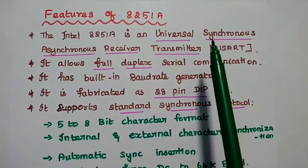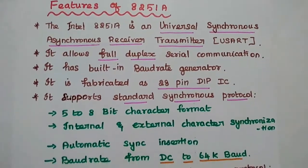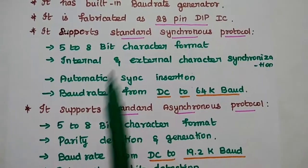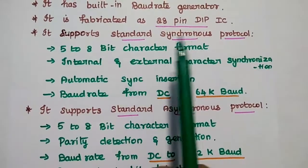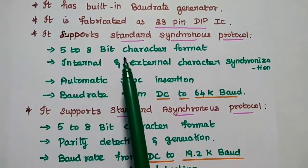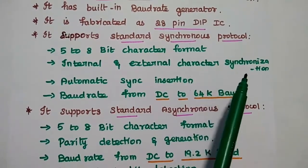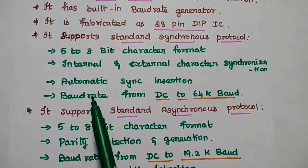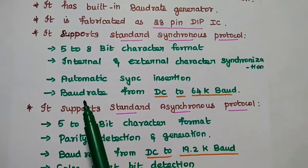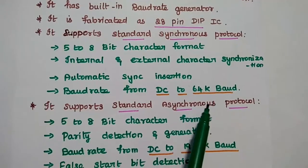Since it is a universal synchronous-asynchronous receiver transmitter, it supports both standard synchronous protocols and asynchronous protocols. For the standard synchronous protocol, it has a 5 to 8-bit character format. Internal and external character synchronization is done, and automatic sync insertion is available. The baud rate is DC to 64 kilo baud.